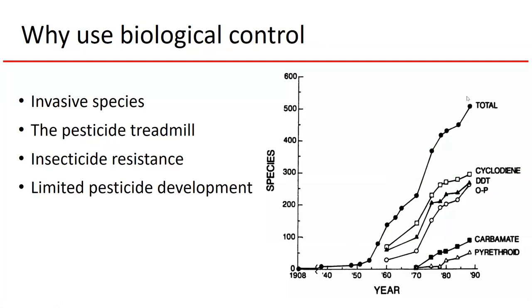A third reason is insecticide resistance. This graph shows the number of different species that have evolved documented resistance to different classes of chemical insecticides since their introduction, broken down by groups including pyrethroids, carbamates, and a total line, showing exponential growth of resistance among insect species. Biological control can be an alternative, especially for groups that have become resistant to typical chemistries. Additionally, the rate at which new active ingredients are coming out is not keeping pace with the rate that insect species are developing resistance.